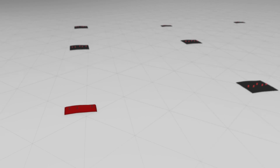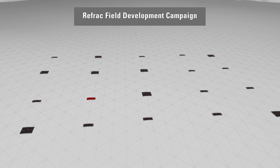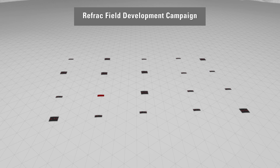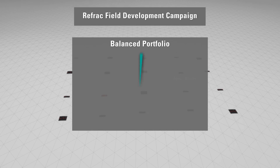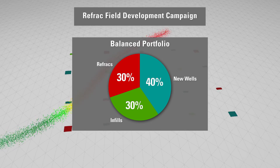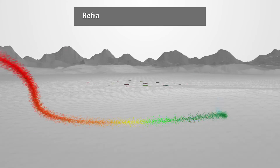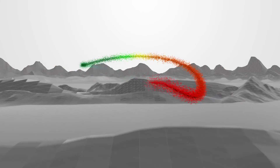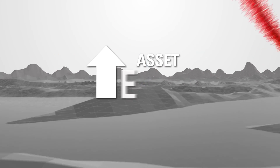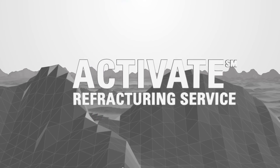Taking the learnings from the refract pilot wells, we collaborate with the operator to develop a refract field development campaign. This collaboration leads to a balanced portfolio of new wells, infills and refracts. Once the portfolio is evaluated, it's integrated into a unit development timeline. Activate Service can improve your asset EUR and lower the cost per BOE by actively targeting bypassed reserves.